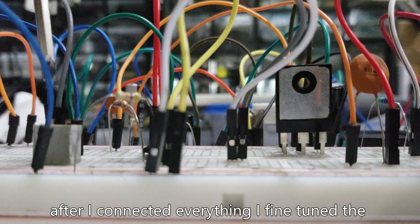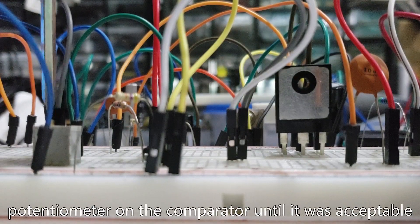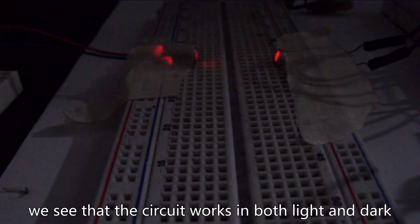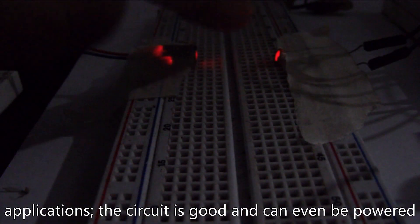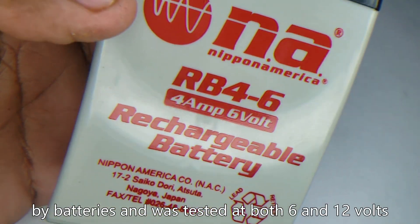After I connected everything I fine tuned the potentiometer on the comparator until it was acceptable. We see that this circuit works in both light and dark applications. The circuit is good and can even be powered by batteries and was tested at both 6 and 12 volts.